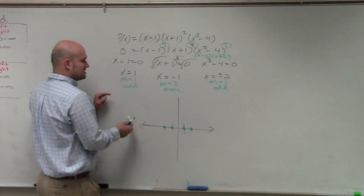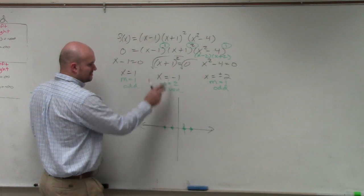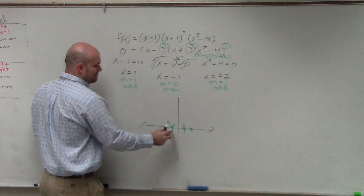At 1, it's odd, so that means it crosses. At 2, I'm sorry, at negative 1, it's even. That means it bounces.